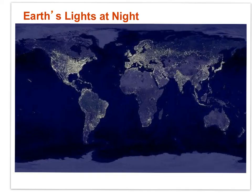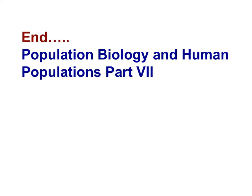Here is an image of the Earth's lights at night. Can you see the countries that have entered the post-industrial stage of demographic transition? Can you see the locations that remain in the pre-industrial or transitional stage? And that brings us to the end of Population Biology and Human Populations, Part 7.